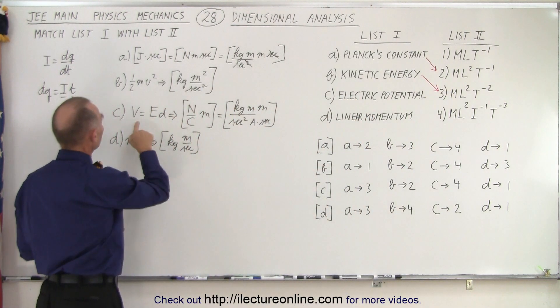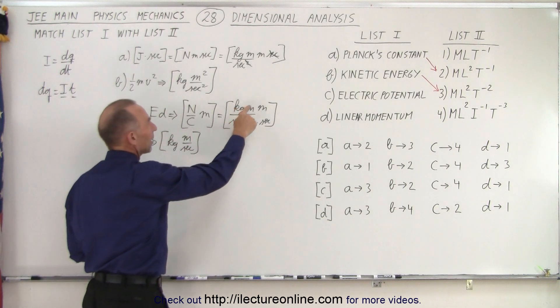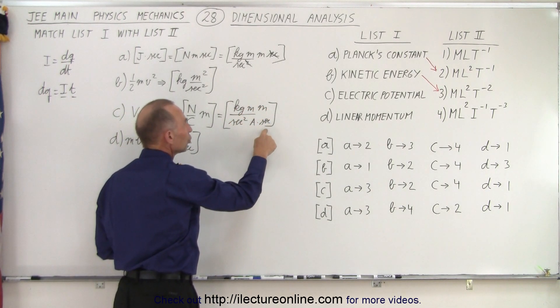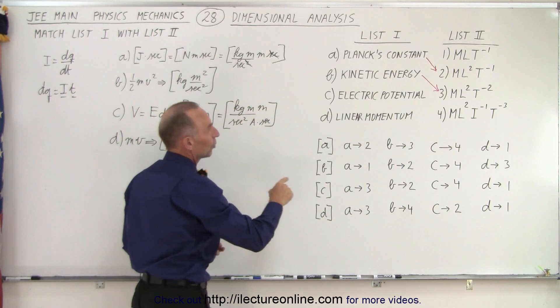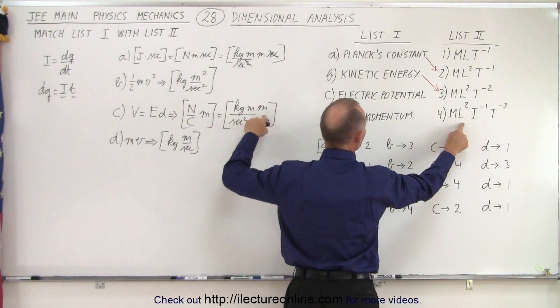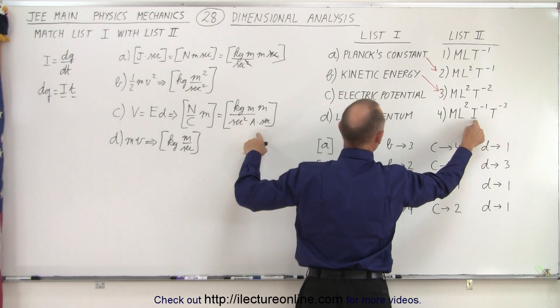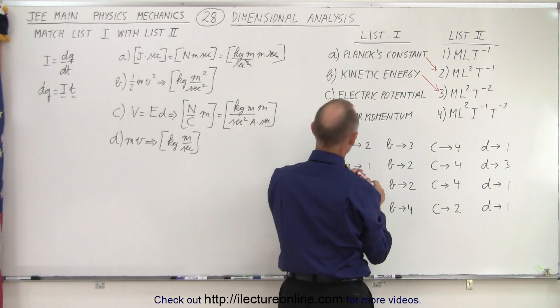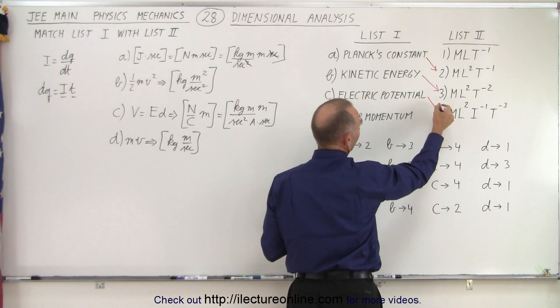On the electrical potential, notice we end up with kilograms meters squared per second cubed per amp. So that means this one here, right? So we have mass, length squared, time to the third power in the denominator, and current in the denominator. So that means that electrical potential matches up with four.